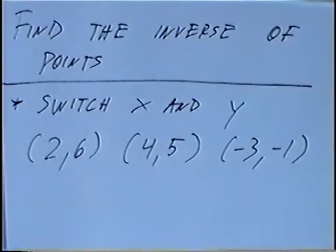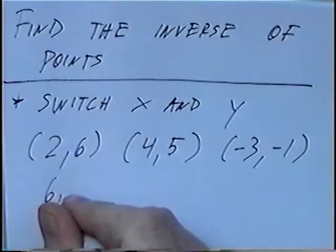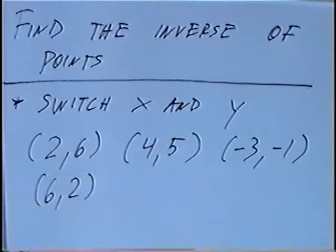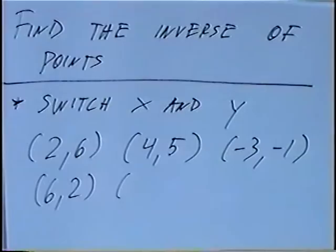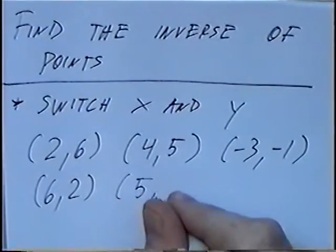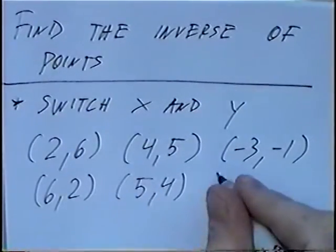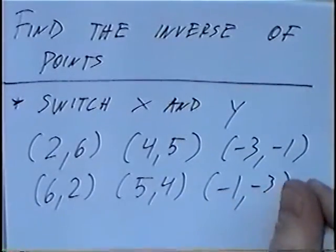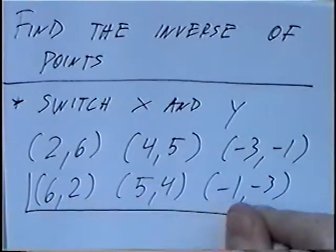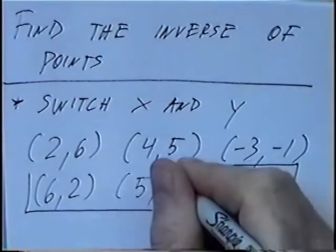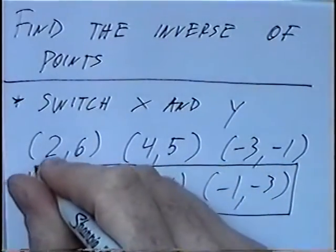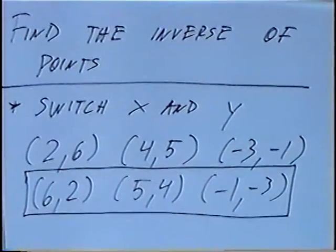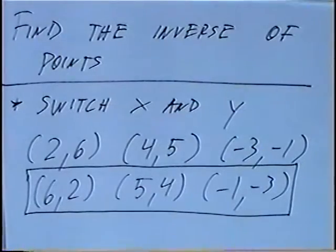So the first point 2 comma 6 — the inverse, by switching them around, would be 6 comma 2. The second point becomes 5 comma 4, and the last point becomes negative 1 comma negative 3. So to find the inverse, the x and the y switch, giving us 6 comma 2, 5 comma 4, and negative 1 comma negative 3.